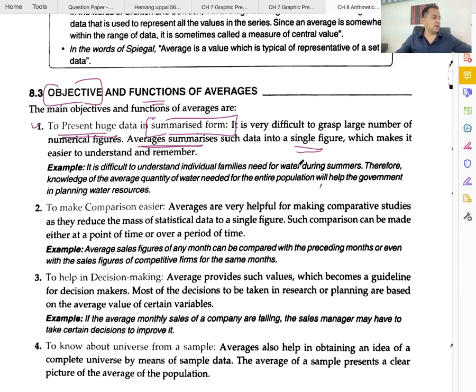For example, Virat Kohli's batting average - he has played many matches, and the average of his scores might be 50 or 60. Instead of looking at every individual score, the average of 65 runs gives us important information in a single figure.